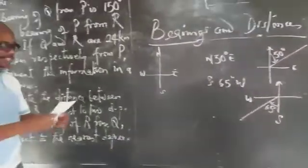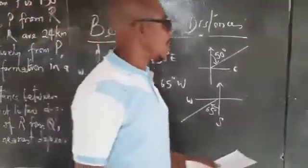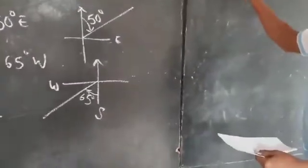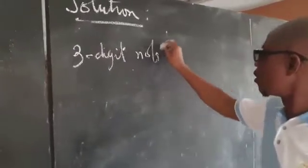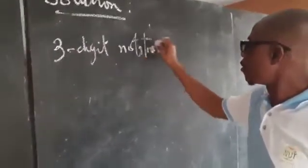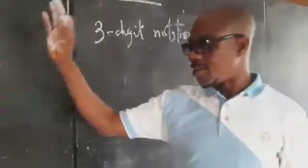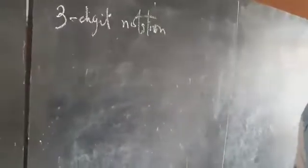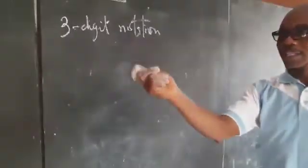And it can be in three-digit notation. Remember that one method is north, south, east, west. The difference is that three-digit notation will have three digits.